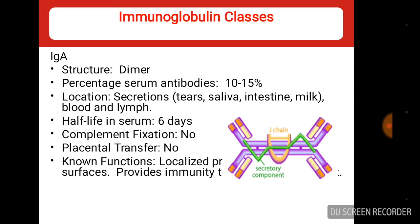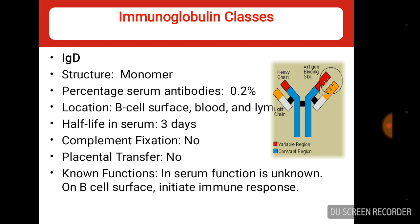IgA has a dimeric structure and constitutes 10–15% of serum antibodies. IgA has two subclasses: serum IgA and secretory IgA. Serum IgA represents 20% of total immunoglobulin in serum, while secretory IgA is the predominant immunoglobulin in saliva, milk, and other secretions. Its half-life in serum is 6 days and its main function is to prevent colonization by pathogens.